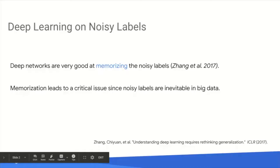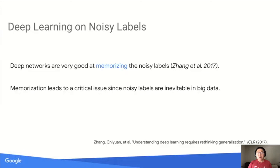In this work, we are studying deep learning on noisy labels. As we know, deep networks are very good at memorizing the noisy label. This leads to a critical issue since noisy labels are inevitable in big data, and the fact that deep networks can easily memorize a noisy label can result in very poor generalization.